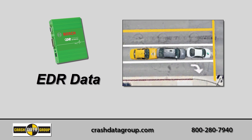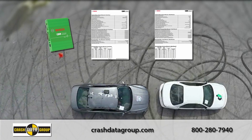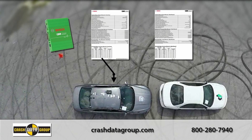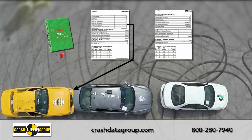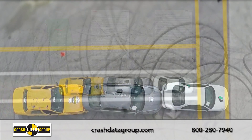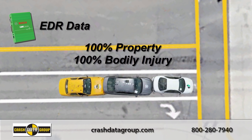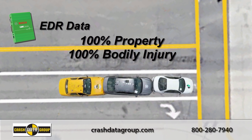Comparing the EDR data contained in the CDR report with the known details of the accident clearly indicates that your insured had come to a complete stop, was struck from behind, and was propelled into the car in front of it. So what did EDR data do for your claim settlement? Without the EDR data, you likely would have paid for your insured's property loss and bodily injury and 50% of the white car's property loss and bodily injury.